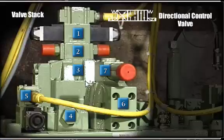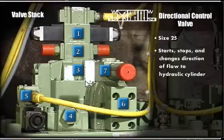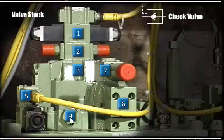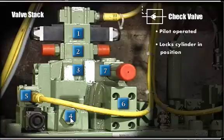Directional control valve, size 25. Starts, stops, and changes direction of flow to the hydraulic cylinder. Check valve, pilot operated, locks the cylinder in position.